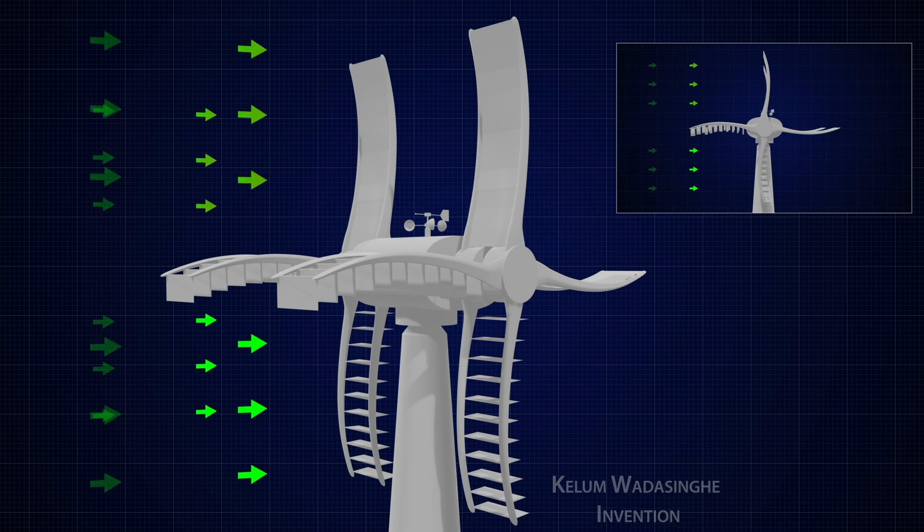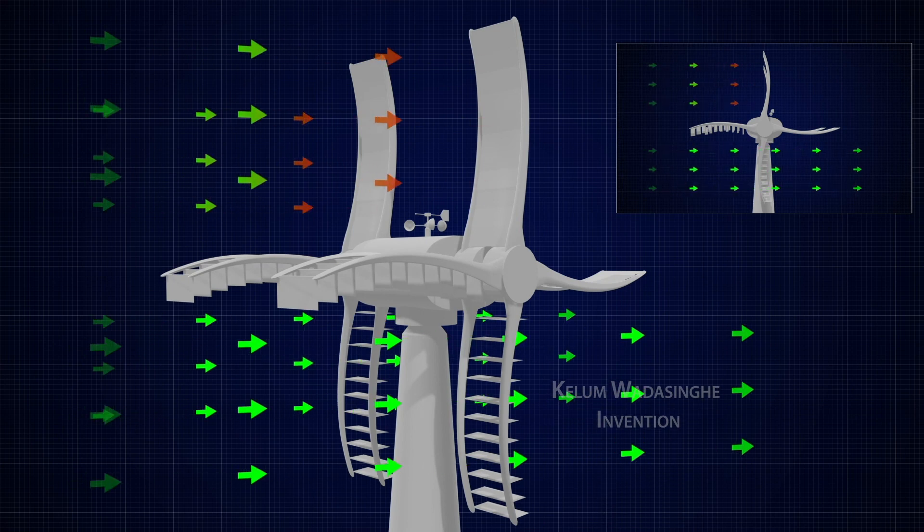As the blade at the top will face the wind, the blades at the bottom will allow the wind to pass freely through the open lures.